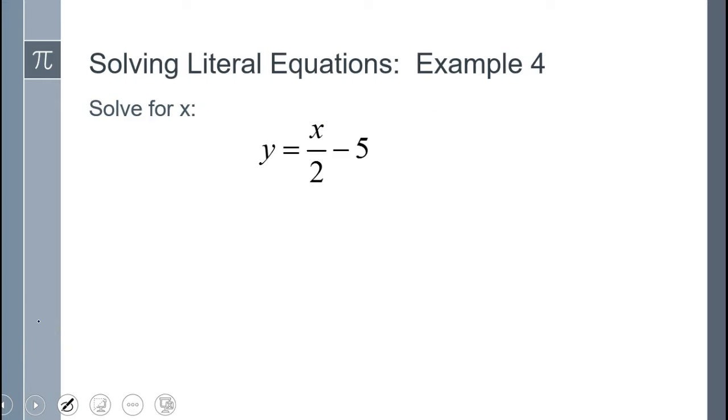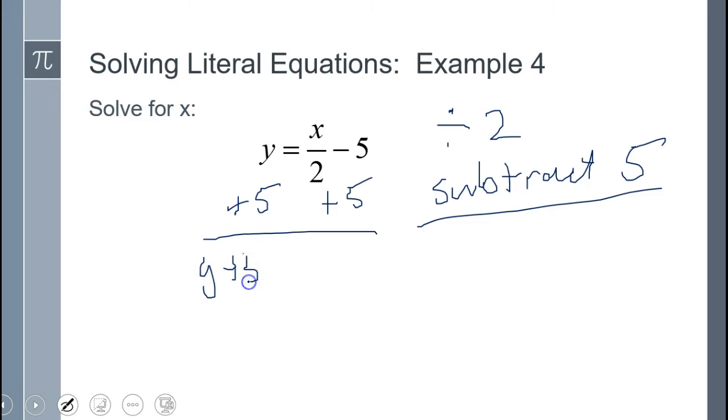So what's done to the X? Well, we say X over 2, we really do ourselves a disservice. What we need to recognize is that X is divided by 2, and then has a 5 subtracted from it. So to do the opposite, I will add 5. I'm doing the opposite operation in the opposite order. Y plus 5 equals X divided by 2.